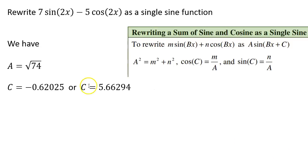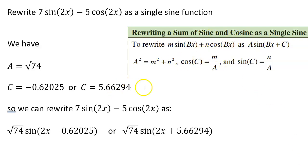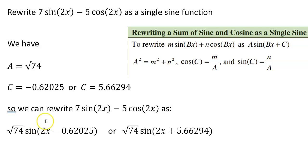Now let's put it all together. Our original expression was 7 sine 2x minus 5 cosine 2x. We found a equals the square root of 74, and c is either the negative angle or its positive coterminal equivalent. So the final result is: square root of 74 times sine of (2x minus 0.62025), or equivalently, square root of 74 times sine of (2x plus 5.66294). The b value of 2 copies directly from the original problem as the horizontal stretch factor.